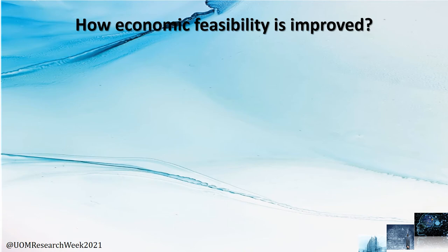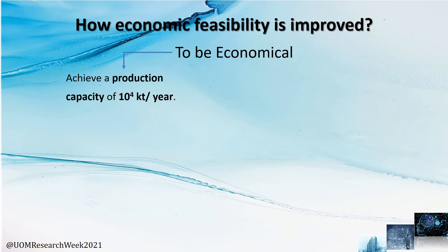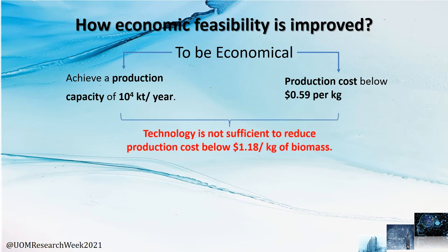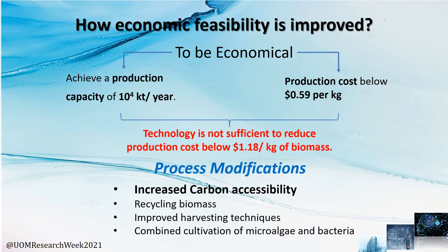At the current stage, despite many advances, this technology is not yet economically feasible. To be economical, microalgae biomass production capacity should increase to 10^4 kilotons per year — an increase of almost 95% over current production — and production cost should fall below 59 cents per kilogram of biomass. However, current technology cannot reduce costs below $1.18 per kilogram. Many process modifications are therefore required. This is where flue gas becomes important: since flue gas contains high levels of CO2, it increases carbon accessibility, significantly reducing cost while also reducing CO2 emissions to the atmosphere. Combined with other process modifications, the desired levels for economic feasibility should be achievable in the near future.